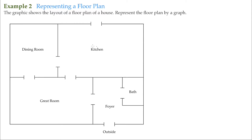We have a dining room, a kitchen, a great room, a foyer, a bath, and of course there's an outside. So we have one, two, three, four, five, and six points of interest. We're going to have six vertices.